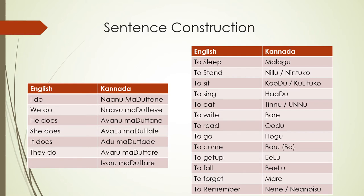Let's see how to construct sentences in a very simple way. I will take you through this first table — pay attention here. 'I do' in Kannada: Naanu Maduttene. 'We do': Madutteve. 'He does': Awanu Maduttene. 'She does': Awanu Maduttene. 'It does': Adu Madutte de. 'They do': Awaru Maduttane. Awaru means somebody far away. Ivaru — somebody when we are referring to a person with closer proximity who is nearby. We say Ivaru Maduttane.